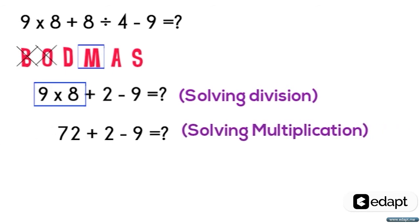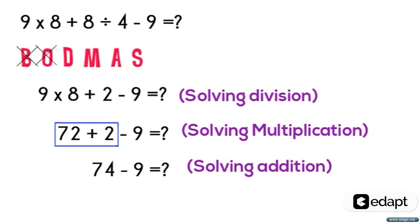The next step is addition, which makes 72 plus 2 is equal to 74. The last order is subtraction, which will get us 74 minus 9 is equal to 65, and hence the answer is 65. This is the first type of problem in substitution.